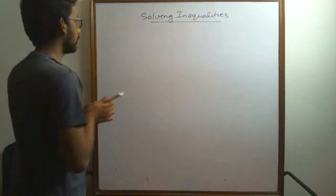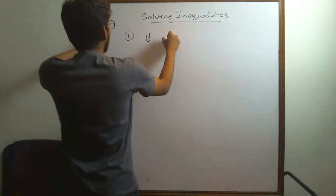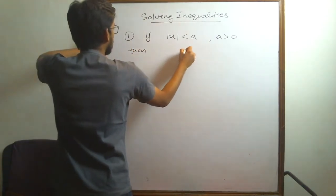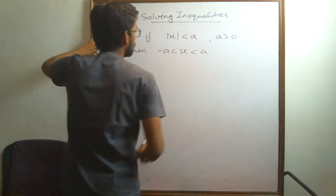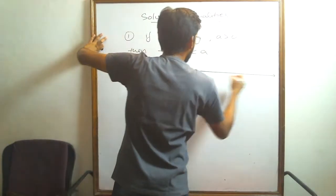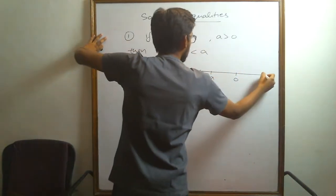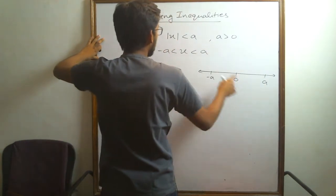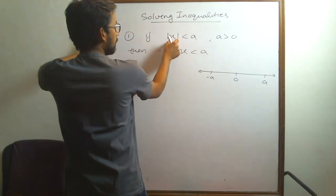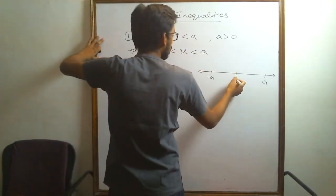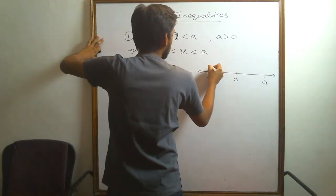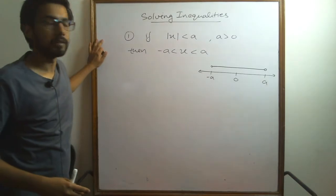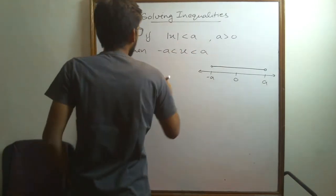Let's start with the first inequality. If mod of x is less than a, where a is positive, then x is greater than minus a and less than a. This is the number line. This is 0, this is minus a and this is a. The distance from 0 to minus a and a both is a. Since the inequality is that absolute value of x should be less than a, the distance from 0 should be definitely less than a on both sides. So we will get all the values between minus a and a, excluding both minus a and a, since there is no equality sign here. So this is our solution.